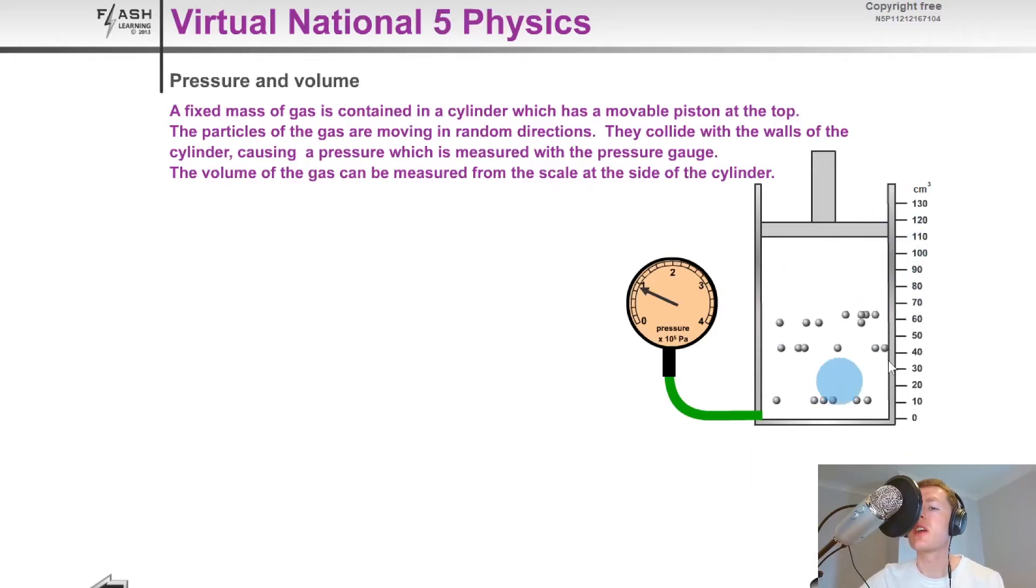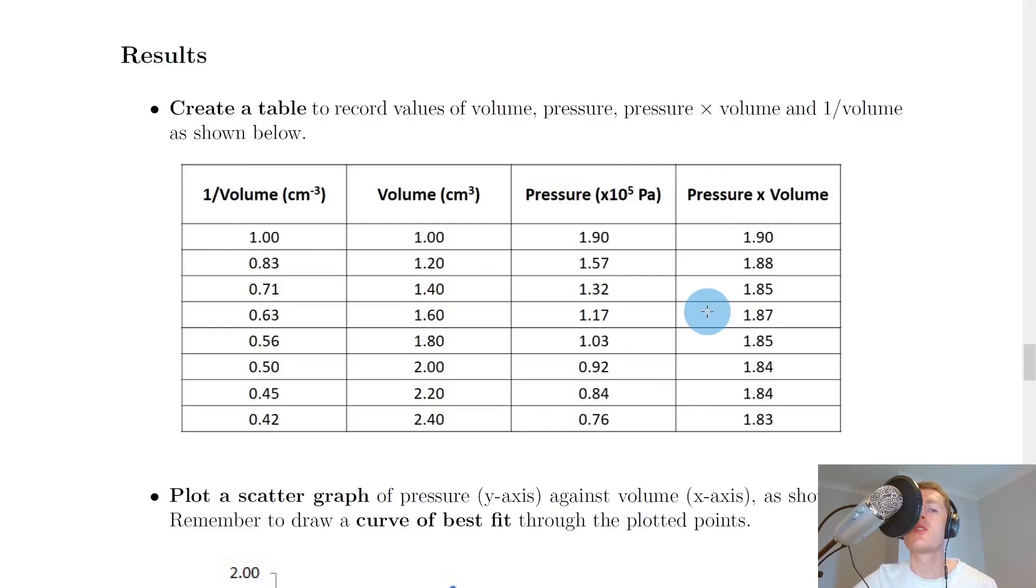I'm going to show you a quick simulation of how you would do this experiment. Here we've got our container of gas with particles moving randomly in all directions, with a pressure gauge and volume scale. This is more like the alternative approach I mentioned earlier. If I start at about 110 centimetres cubed volume and 0.9 times 10 to the 5 pascals pressure, then adjust from 110 down to 100, the pressure has increased to 1. From 100 to 90 centimetres cubed gives about 1.1, then 90 to 80 gives 1.2, down to 70 gives about 1.4 and so on. You adjust the volume of the gas and record the pressure on the pressure gauge.